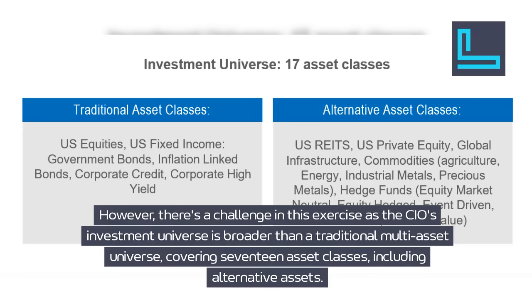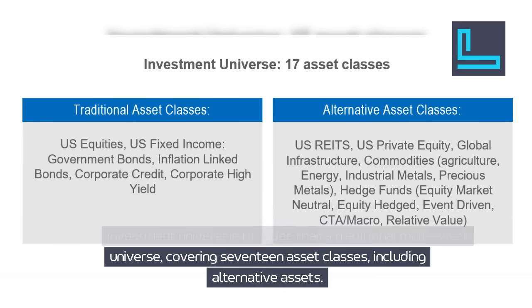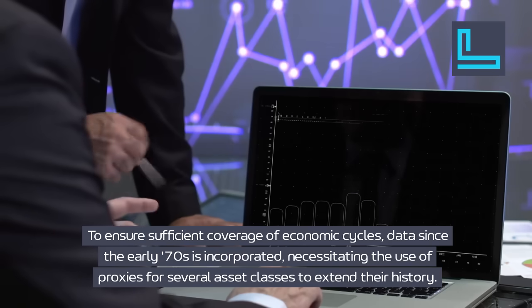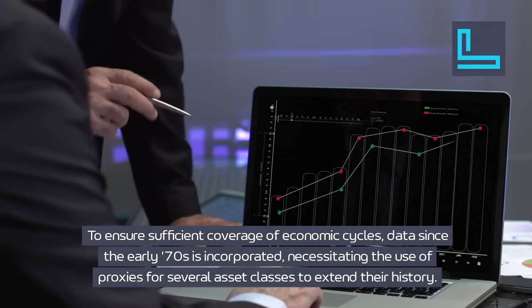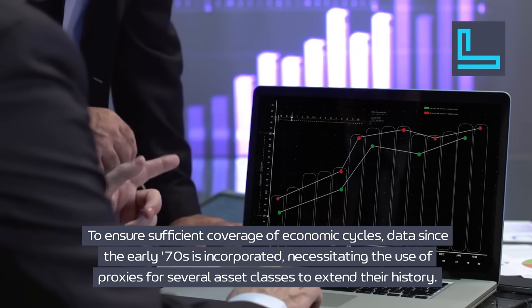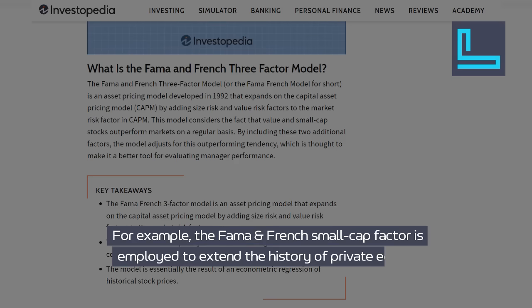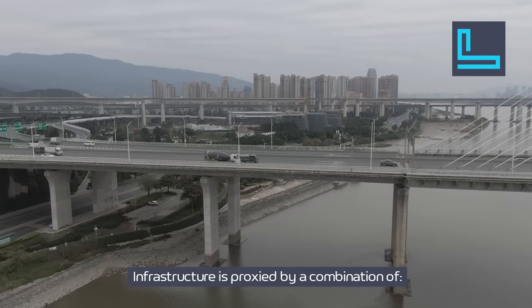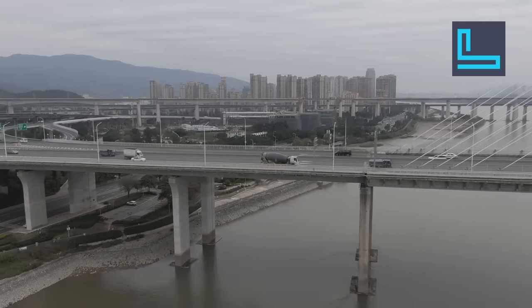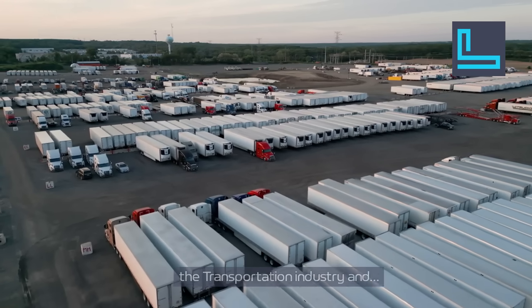However, there's a challenge as the CIO's investment universe is broader than a traditional multi-asset universe, covering 17 asset classes including alternative assets. To ensure sufficient coverage of economic cycles, data since the early 1970s is incorporated, necessitating the use of proxies for several asset classes to extend their history. For example, the Fama and French small cap factor is employed to extend the history of private equity, supplemented by a beta factor and an illiquidity premium. Infrastructure is proxied by a combination of the transportation industry and the utility sector.